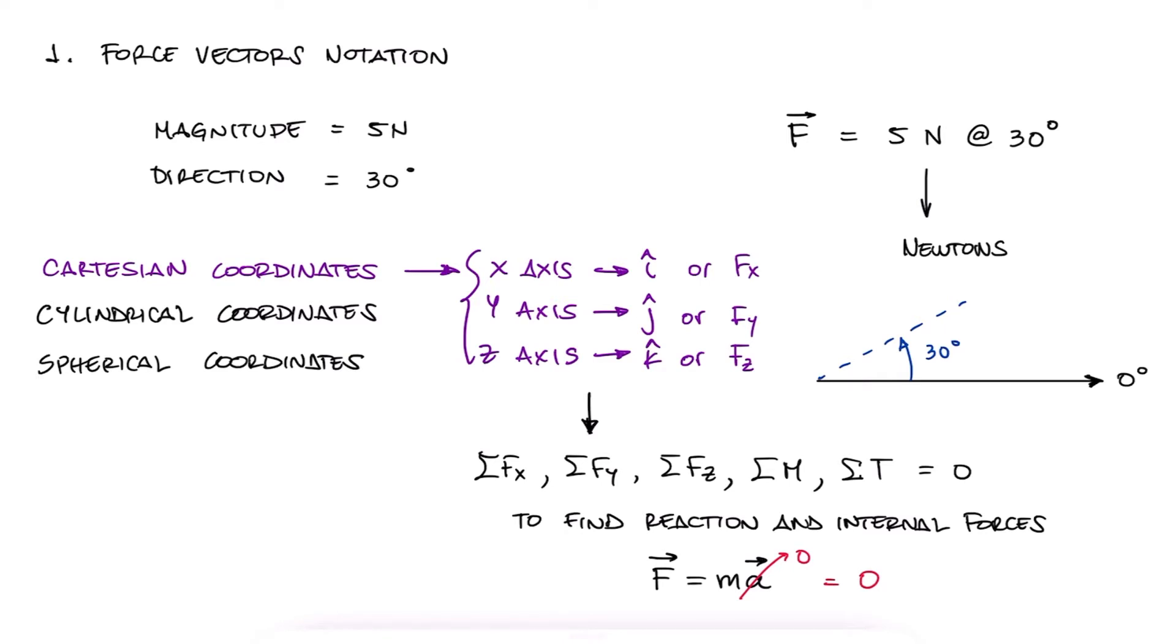When given a force vector with its magnitude and direction, simple trig functions like sine, cosine, and tangent are used to find the vector components. To find a force vector magnitude and direction based on its components, which is the opposite process, we use the Pythagorean theorem.